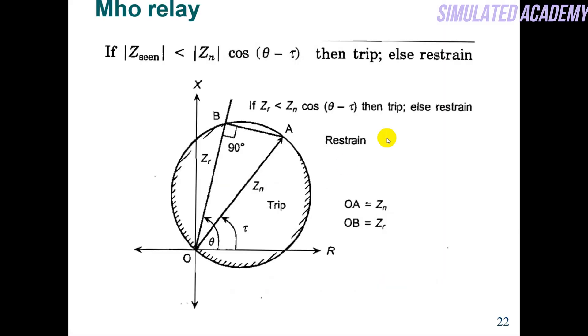As we have seen, Z_seen should be less than Z_in × cos(θ − τ) for the relay to trip; otherwise it will restrain. On the impedance diagram, the x-axis has the real component and the y-axis has the imaginary component — that is, reactance.